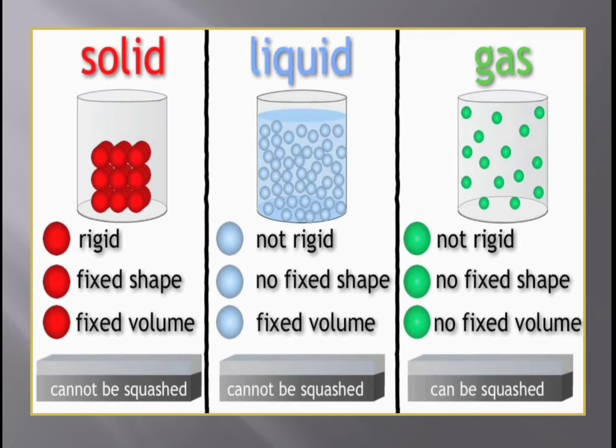If the small particles are packed tightly and there is no space in between the particles, then they are called solids. When the particles are tightly packed and there is no space between them, it is called solids.